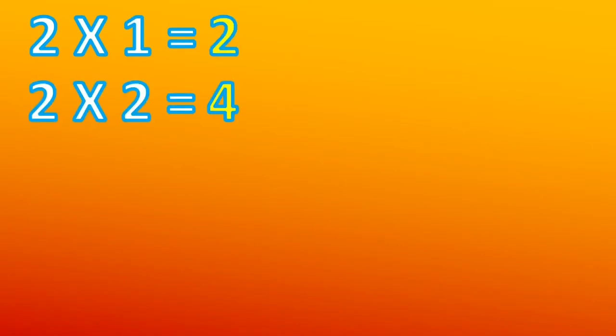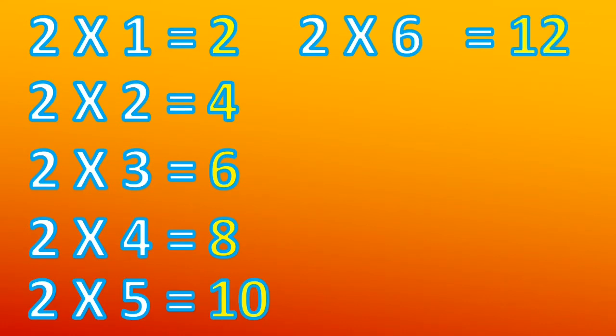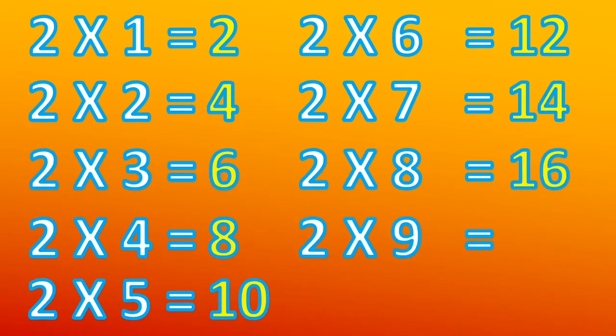Hi friends, let's learn table of two. Two ones are two, two twos are four, two threes are six, two fours are eight, two fives are ten, two sixes are twelve, two sevens are fourteen, two eights are sixteen, two nines are eighteen, two tens are twenty.